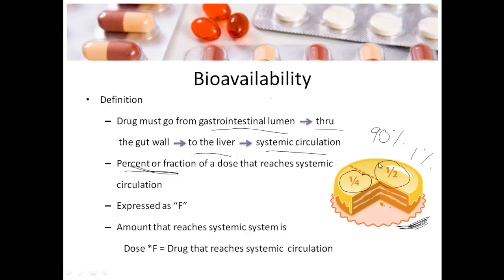Bioavailability is expressed as F — not sure why F and not B, but that's the convention. From now on we'll express it as the letter F. We can determine the amount that reaches systemic circulation if we know two things: dose and bioavailability. All we have to do is multiply those together — Dose × F — to get the amount of drug that reaches systemic circulation.